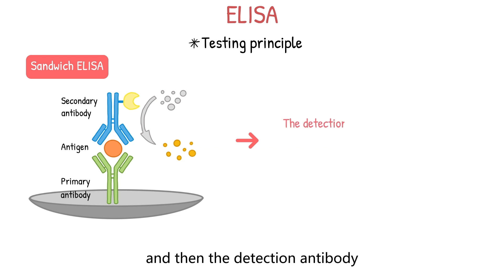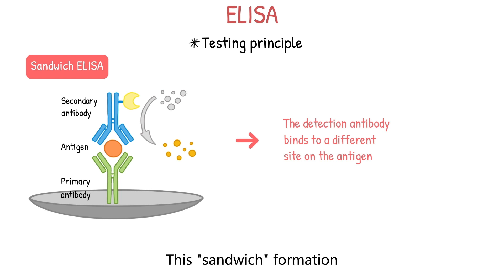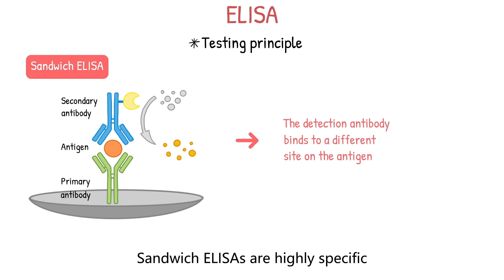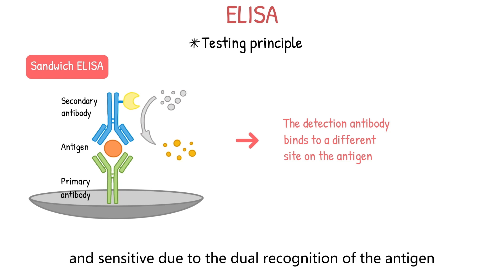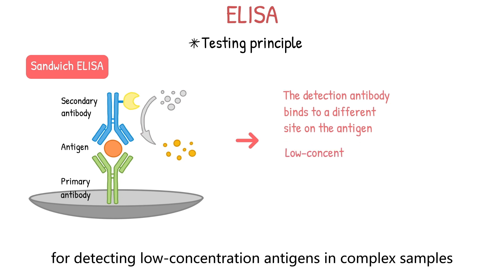The detection antibody then binds to a different site on the antigen. This sandwich formation, with the antigen between two antibodies, gives the technique its name. Sandwich ELISAs are highly specific and sensitive due to the dual recognition of the antigen, making them suitable for detecting low-concentration antigens in complex samples.